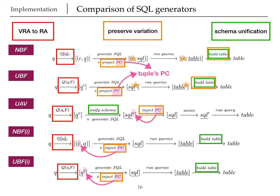As I said, our SQL generators have three main tasks and their difference is where they conduct this task. I won't get into their details, but from our experiments we can conclude that NBFI mostly performs better than NBF and UBFI mostly performs better than UBF. While UAV mostly performs better than NBFI and it is mainly comparable to UBFI.